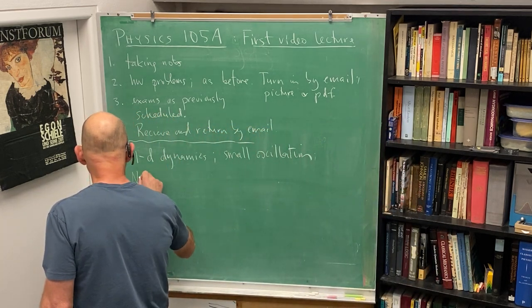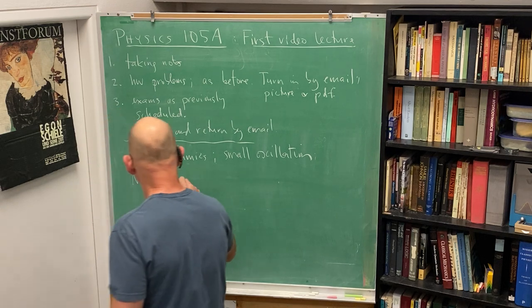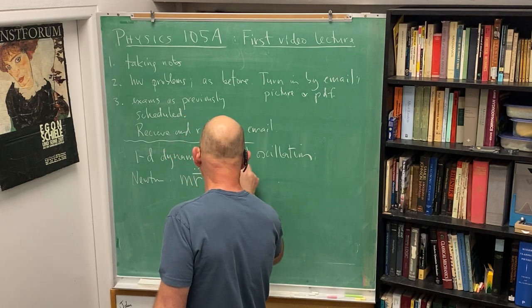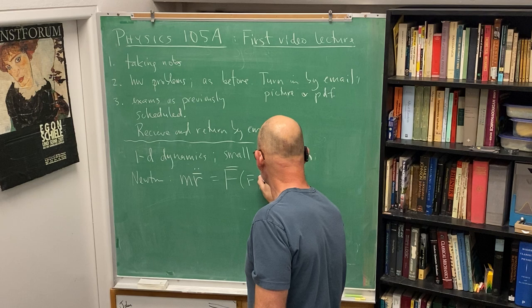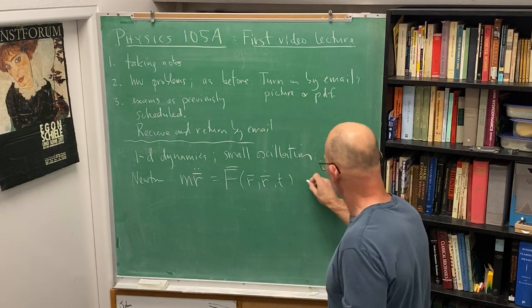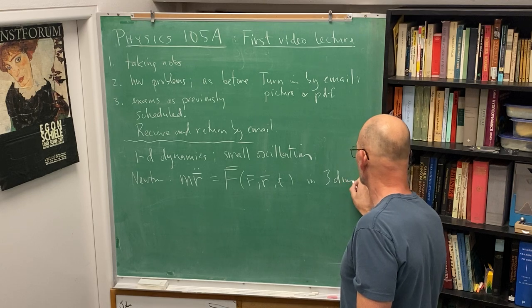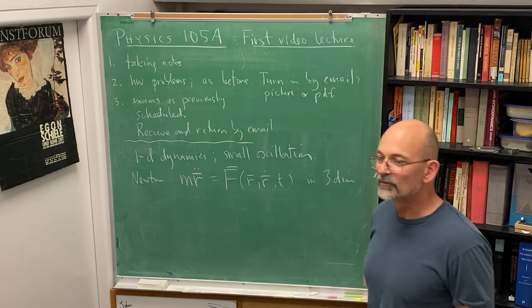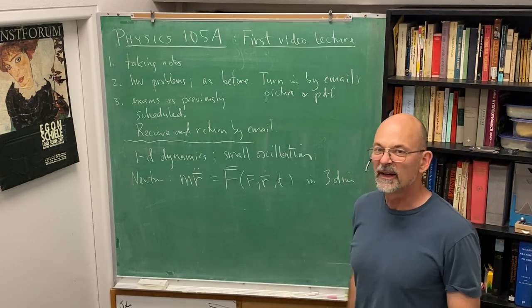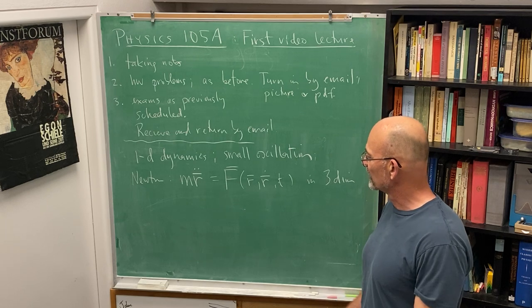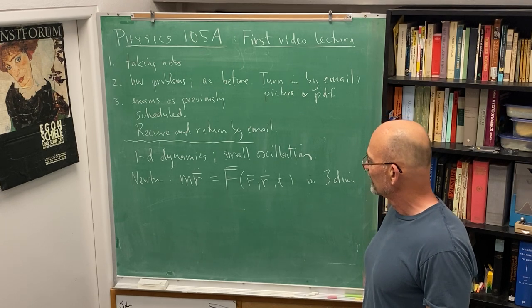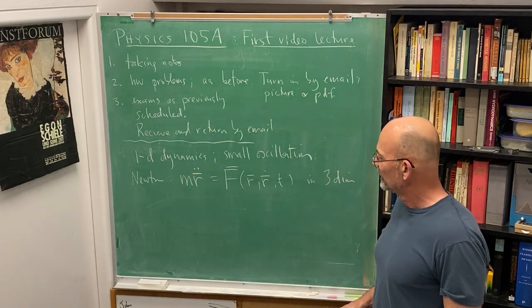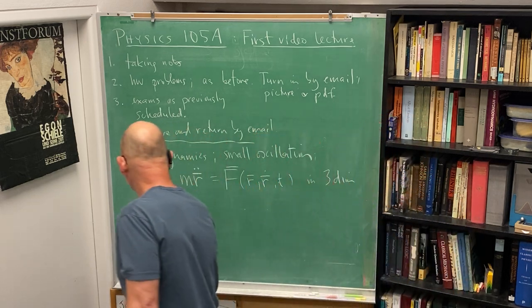So now we're back to Newton's law. I'll write it out for us: m times acceleration equals F of position, velocity, and time, in three dimensions. And I have a couple of interesting problems for us. You know we're headed for the central force problem, the Kepler problem, but right now we're going to do a couple of problems for the next couple of days that connect to things we've already done.